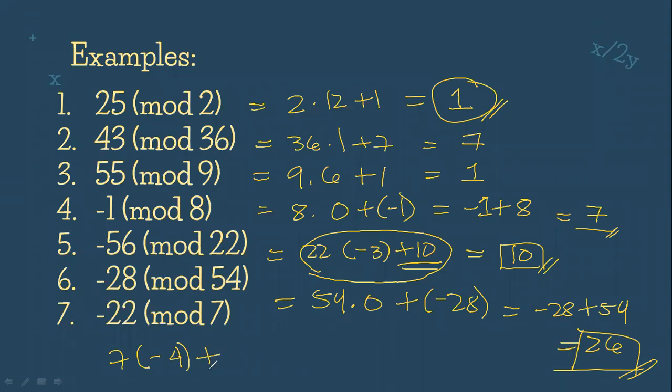So we have negative 4 times 7, that's negative 28, plus what number to reach negative 22? You are correct, plus 6. Which gives us, what is our remainder? That is only 6. So 6 is our answer.